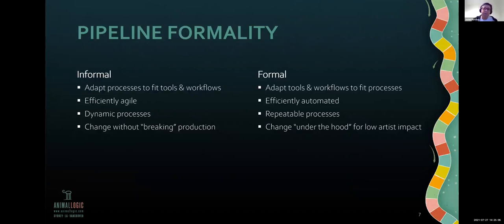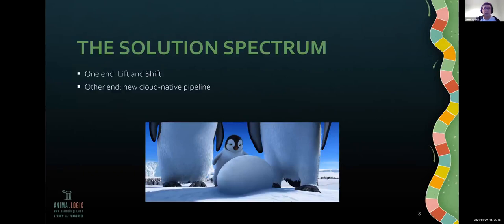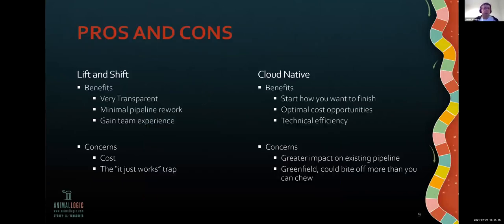On the formal end of the spectrum, instead of adapting your process to fit the tools, you're adapting the tools to fit the processes — extending them, automating them, writing plugins. You get efficiency from automation, your processes are repeatable, and you have the option to change things under the hood to keep artist impact low. When it comes to transitioning to the cloud, there's a spectrum: at one end, lift and shift — just picking up what you've got and running it in the cloud, low impact. At the other end, a new cloud-native pipeline.